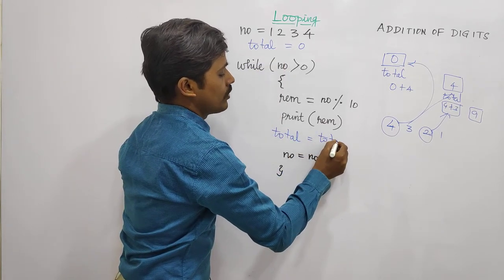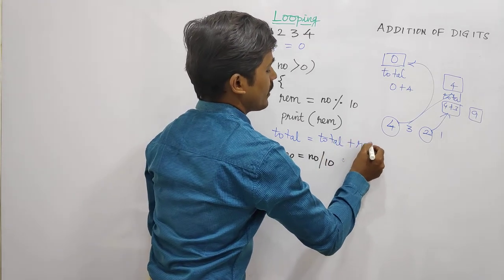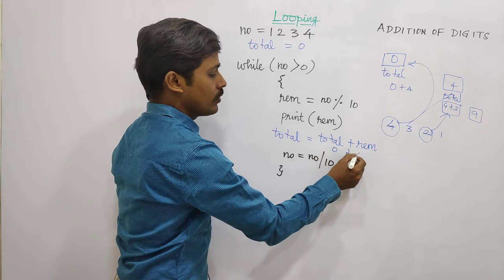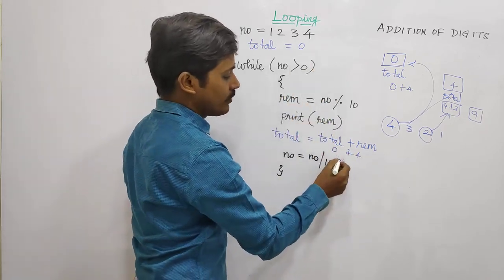Total equals to Total plus Reminder. That's how we can do it. First, total is 0 plus 4. Total is 4. That means total is 4.